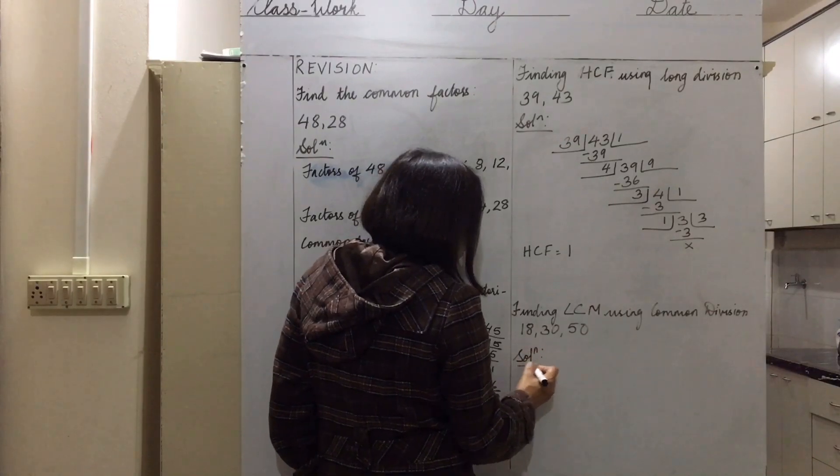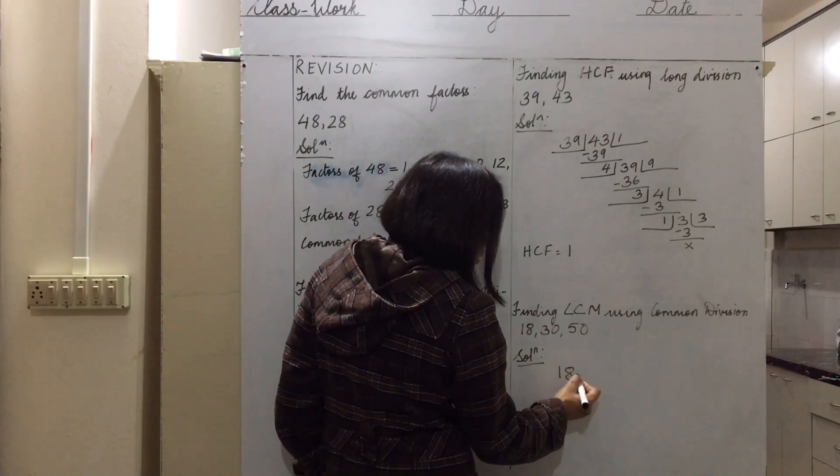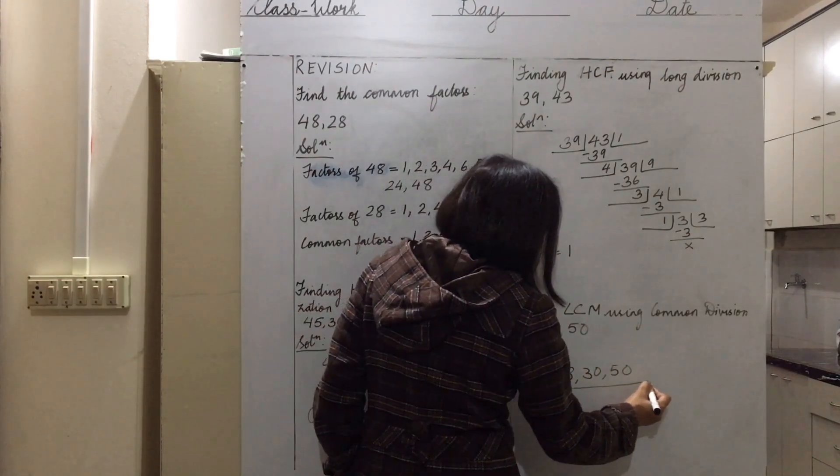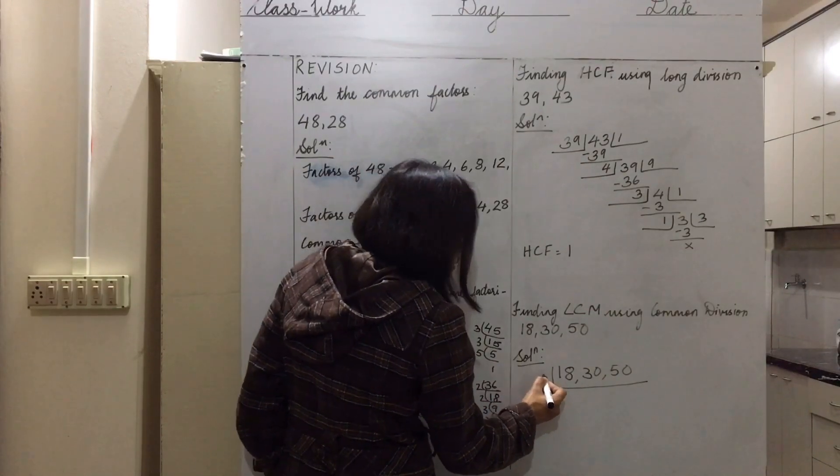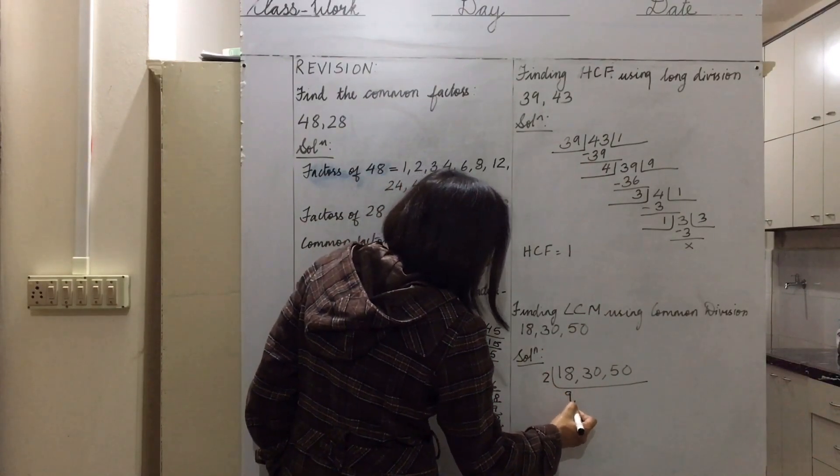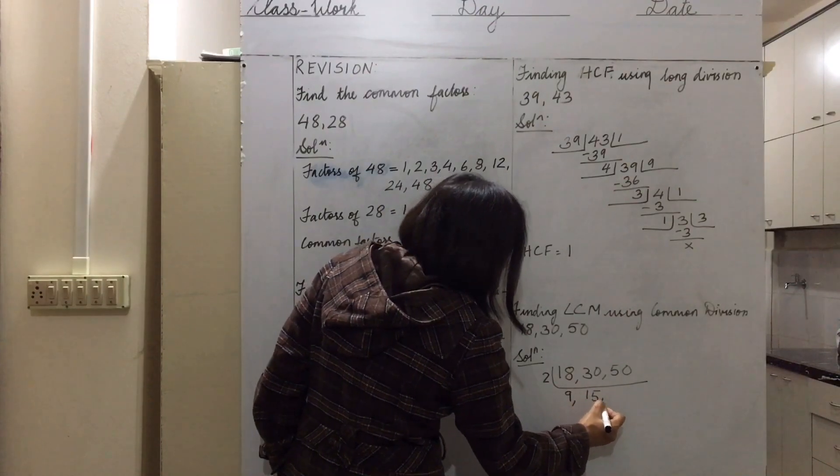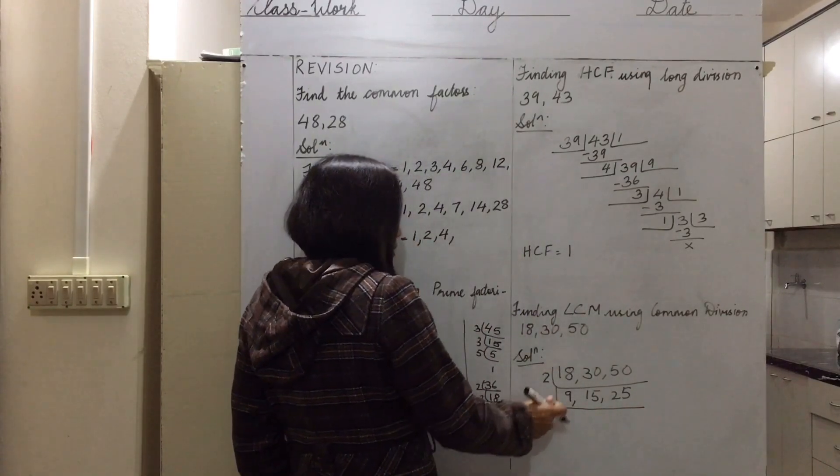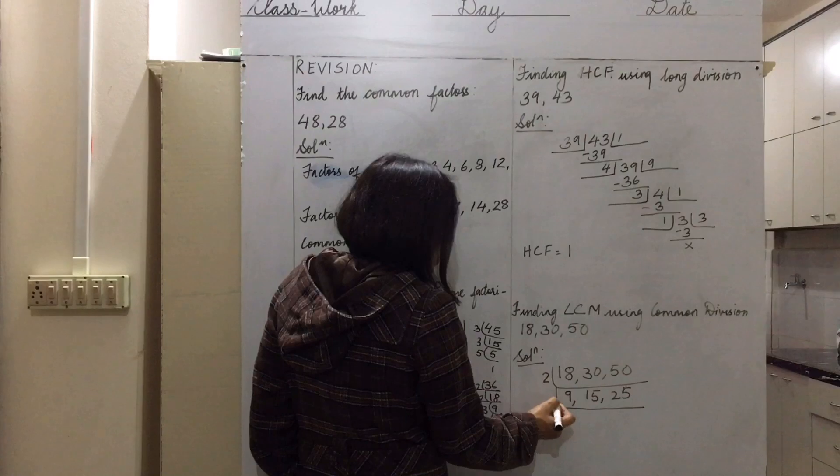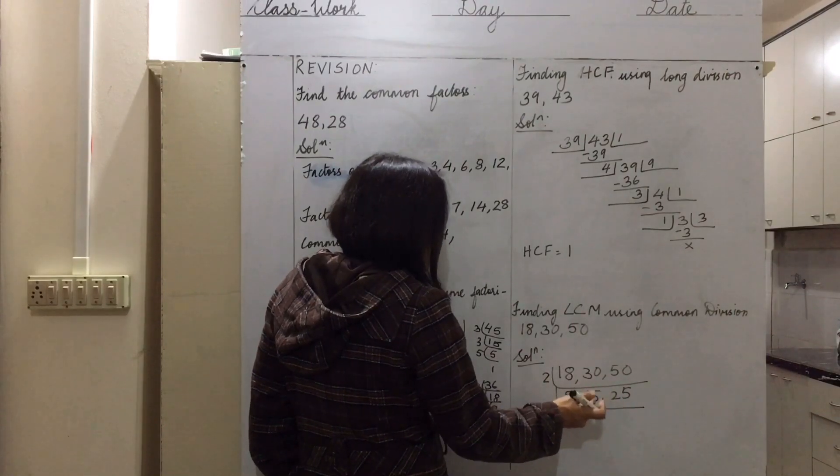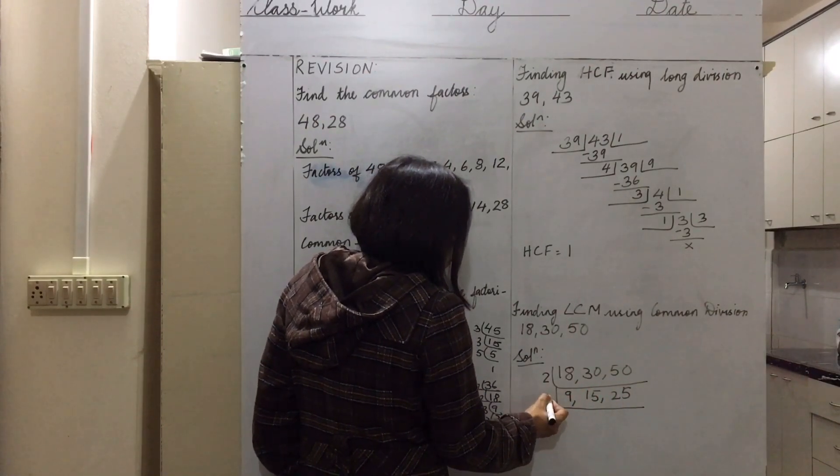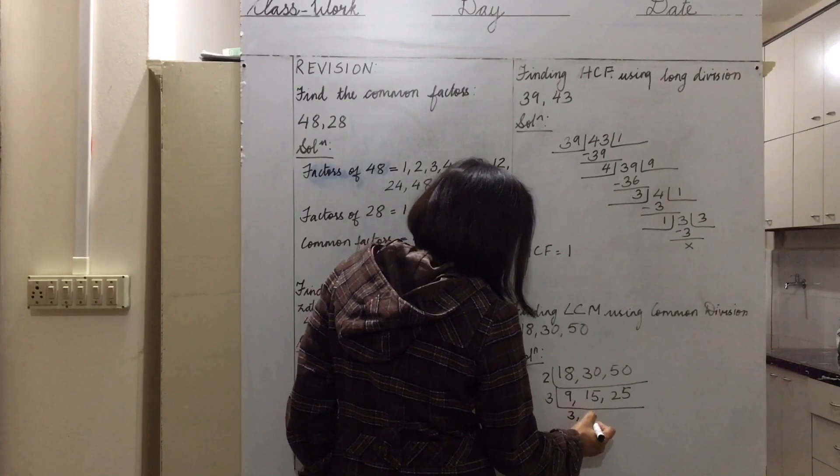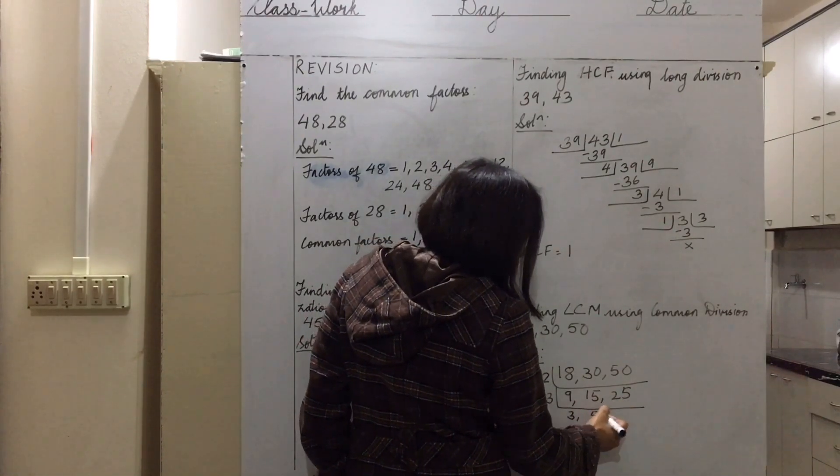Then finding the LCM using common division. We have 18, 30, 50. We divide by common factors. Two can divide them all: 9, 15, 25. What else can divide them? Three can divide 9 and 15.